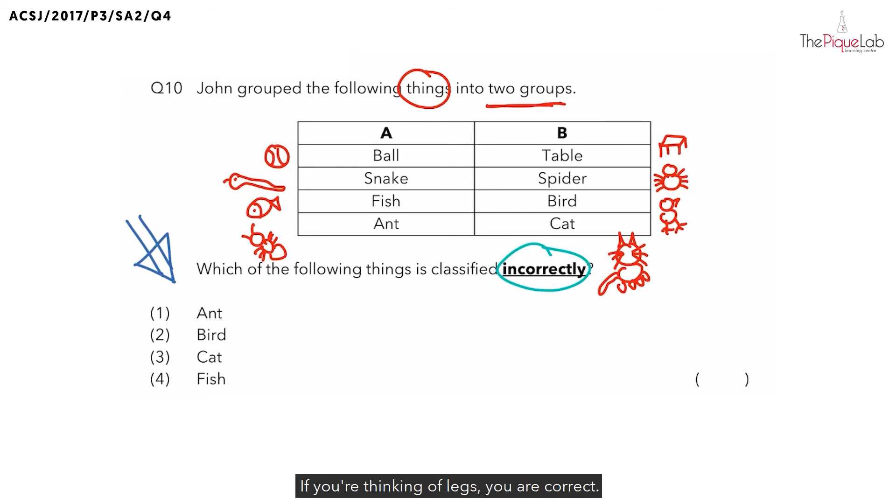If you are thinking of legs, you are correct. You would realize that the ball, snake, and fish has no legs, but the ant has legs. And this is similar to the table, spider, bird, and cat that has legs as well.